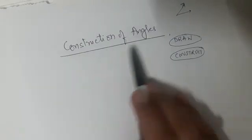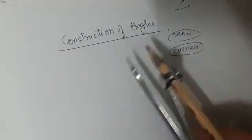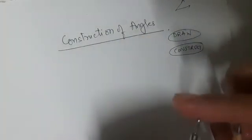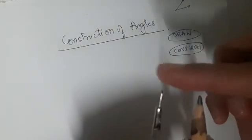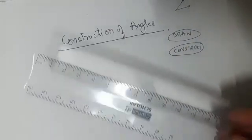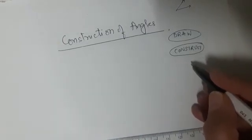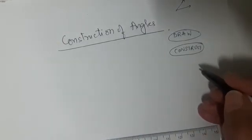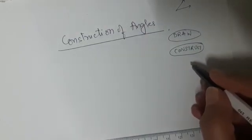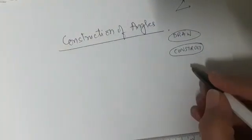For construction of angles, we need to use a compass. When you fix a pencil in the compass, the tip of the compass and the tip of the pencil should be aligned — that is very important. Then you are going to use a ruler. These are the construction tools we use. Today I will be discussing construction of angles specifically in multiples of 15: whatever numbers appear in the table of 15.